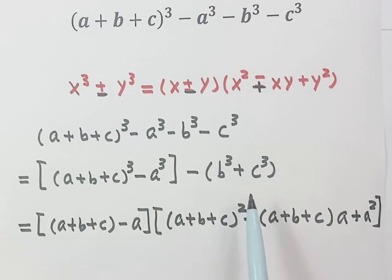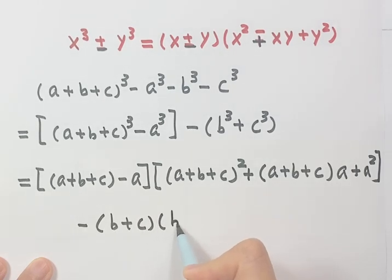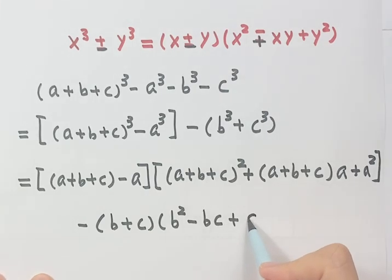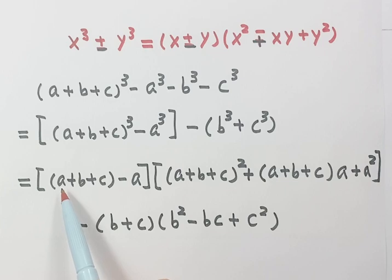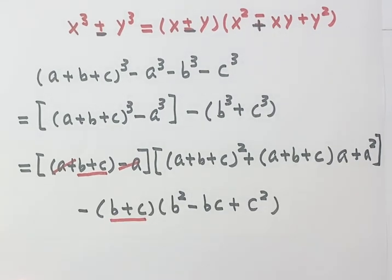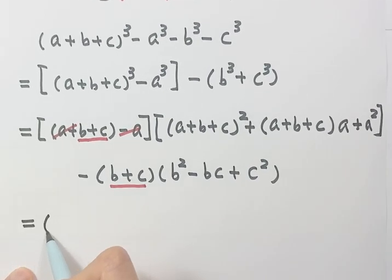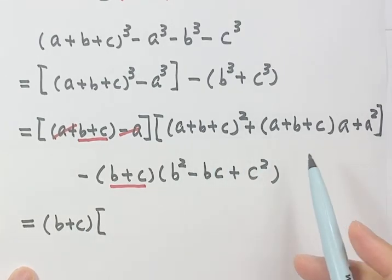So now let's see the second one — also use the formula. And here we have just b plus c, then here b squared, then minus b times c, then c squared. So here positive and negative cancel. So here we have b plus c. But here we also have a b plus c, so let's take out the common factor b plus c.